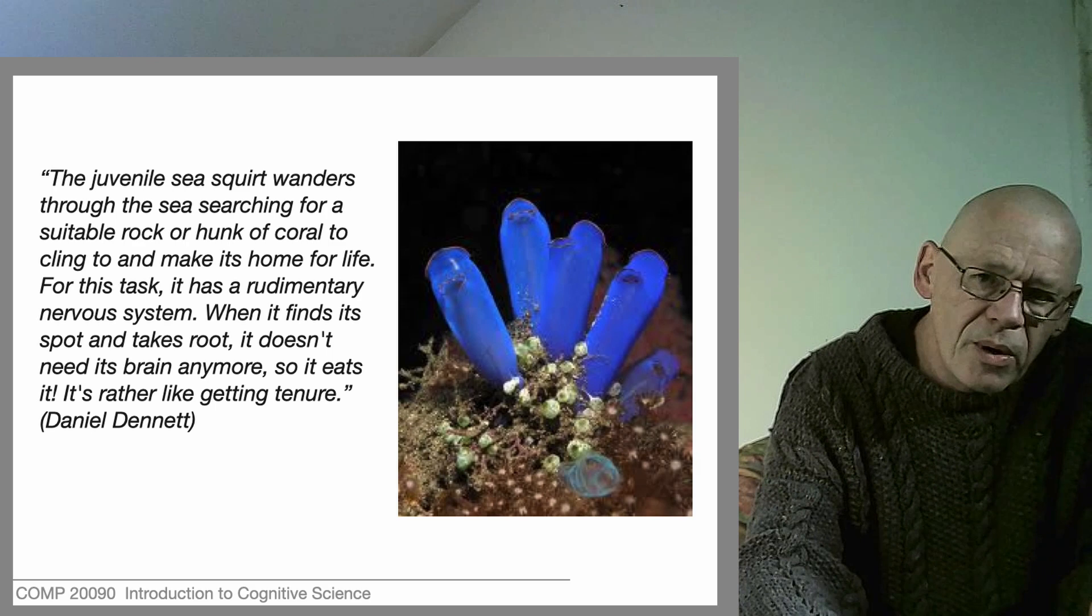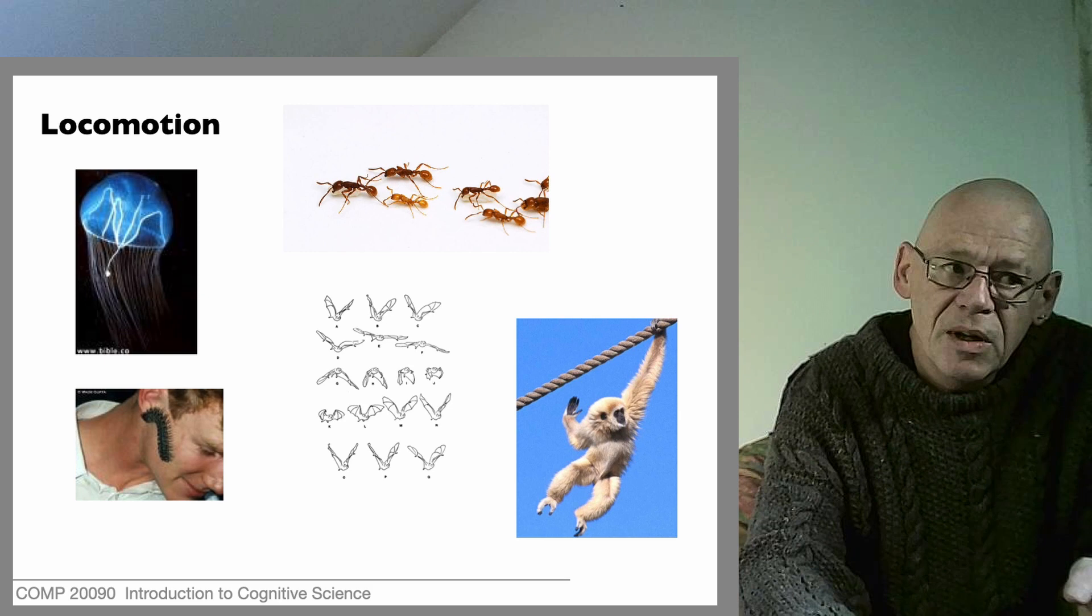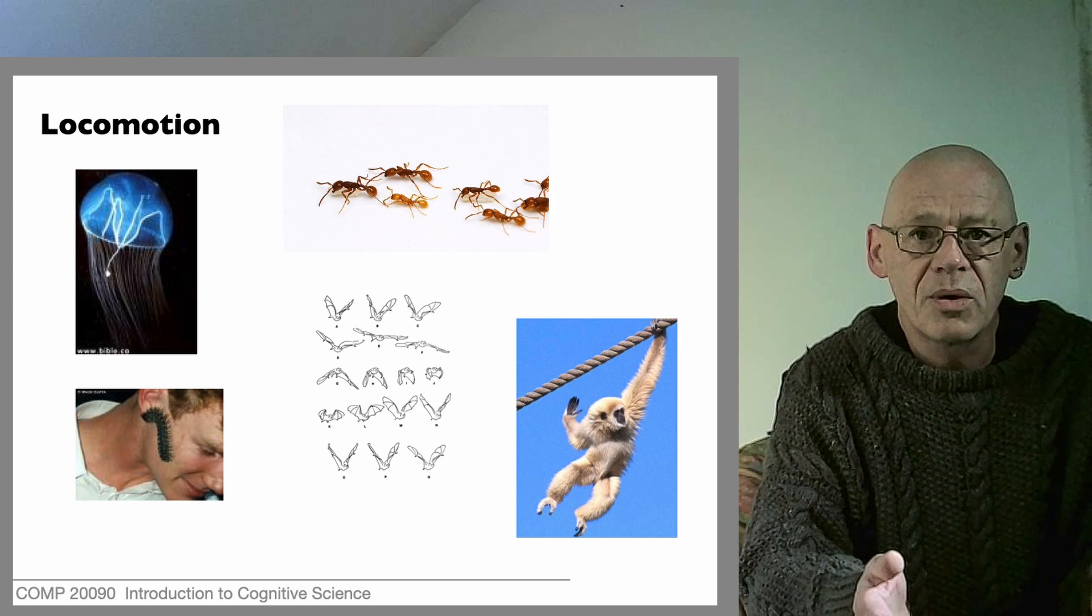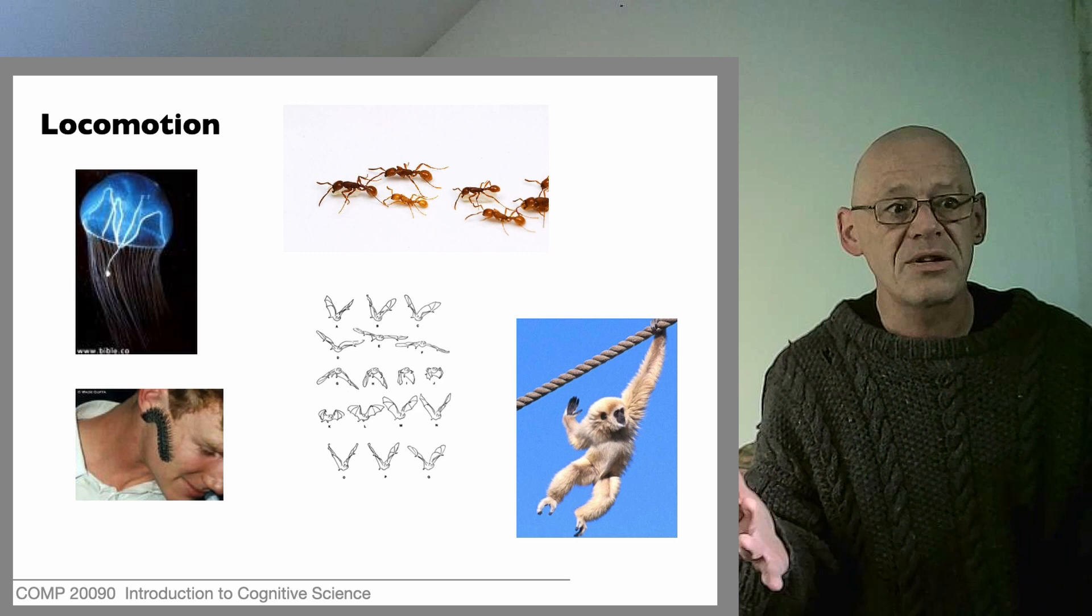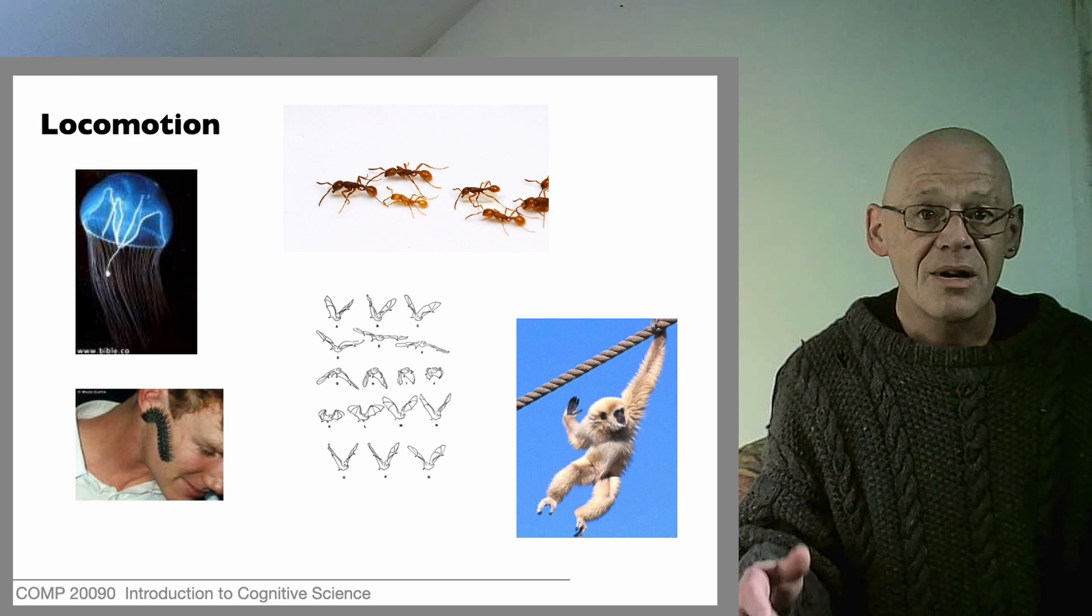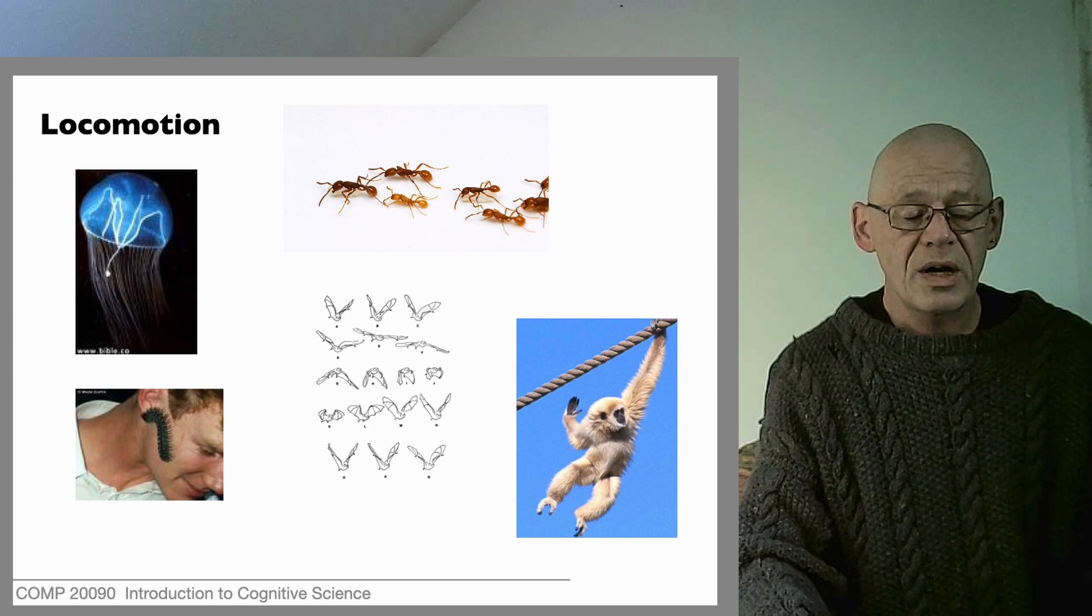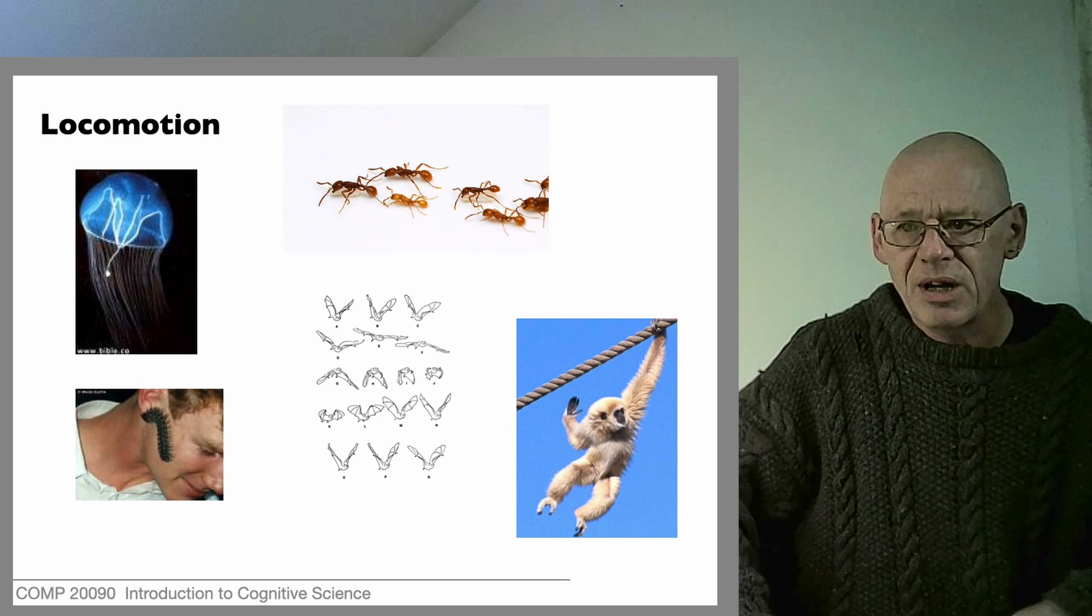In order to find a way around here, we have to look at the details of how movement happens. If we concentrate on getting around in the world, we find all kinds of different ways of solving this in nature. We see the pulsing of the jellyfish, the multiple legs of insects, the wings of bats and birds, the use to which gibbons can put their arms.